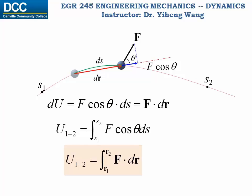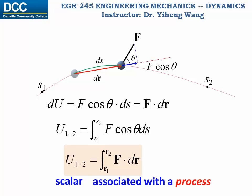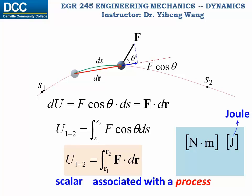Since the dot product of two vectors is always a scalar, work done by a force is always a scalar, and it is always associated with a process involving change in position. In the SI unit system, the unit of work is newton times meter — one newton times one meter equals one joule. In the US customary system, the unit for work is foot-pound, written this way to be distinguished from pound-foot, which is the unit for moment.